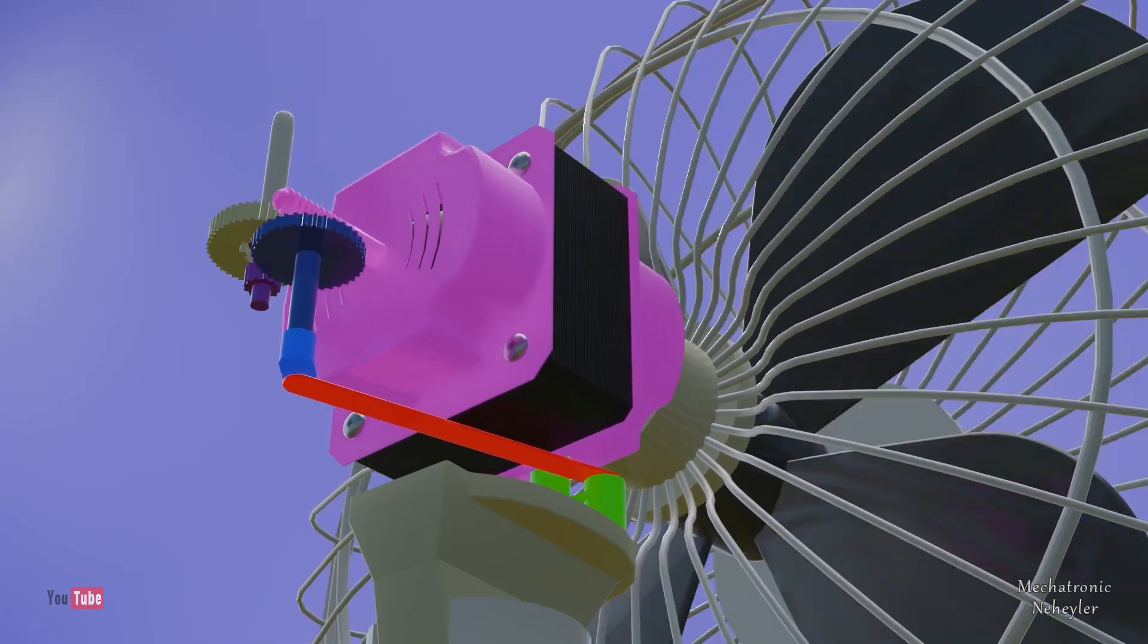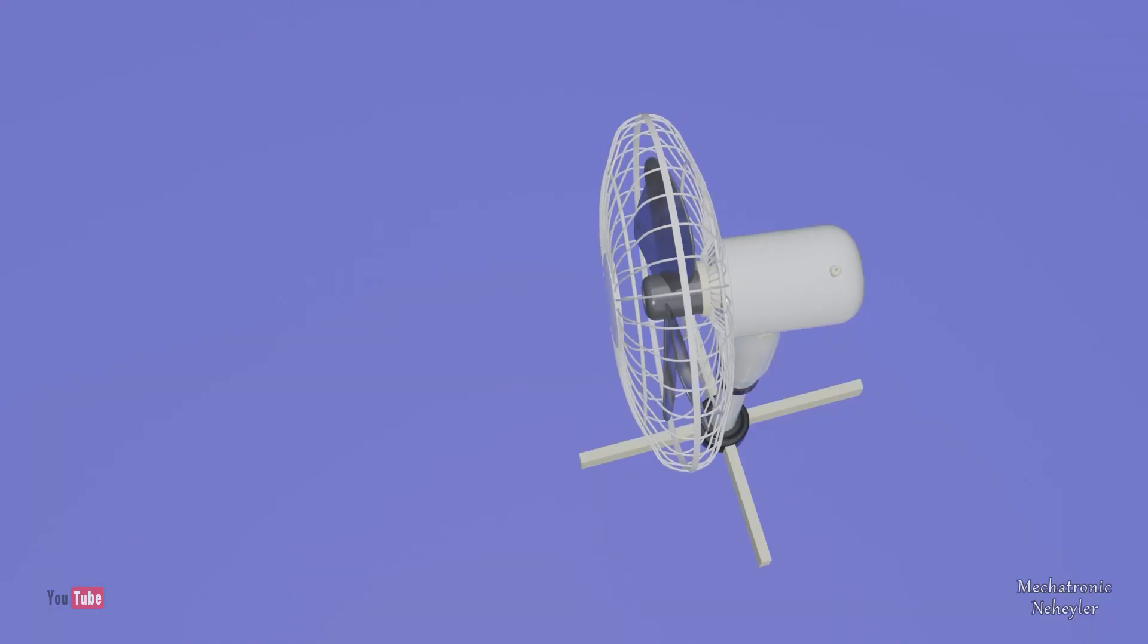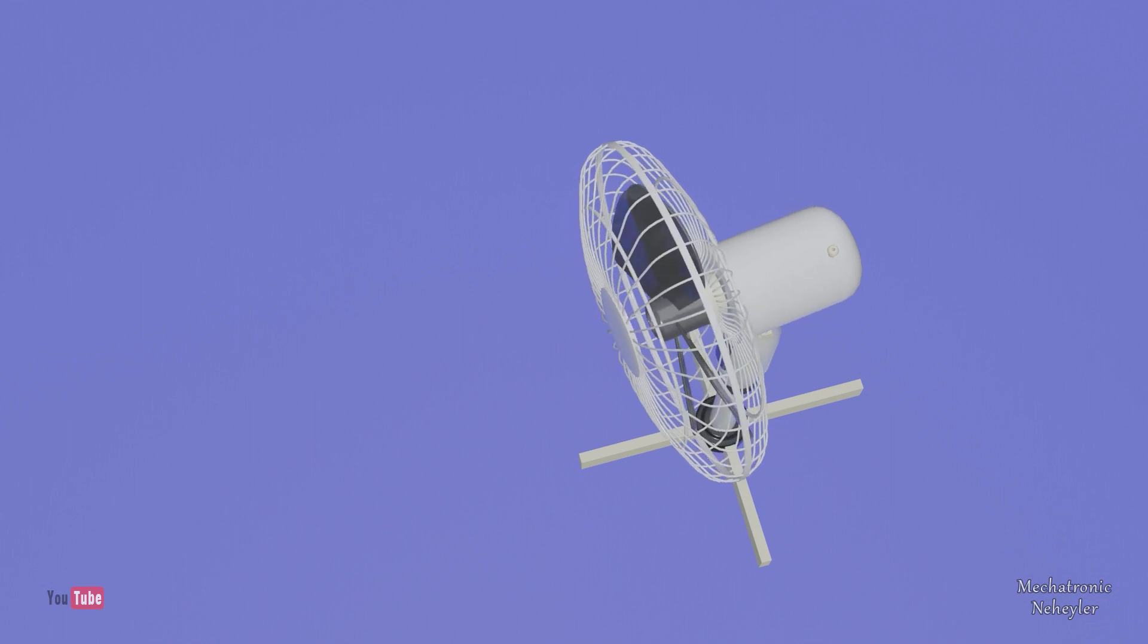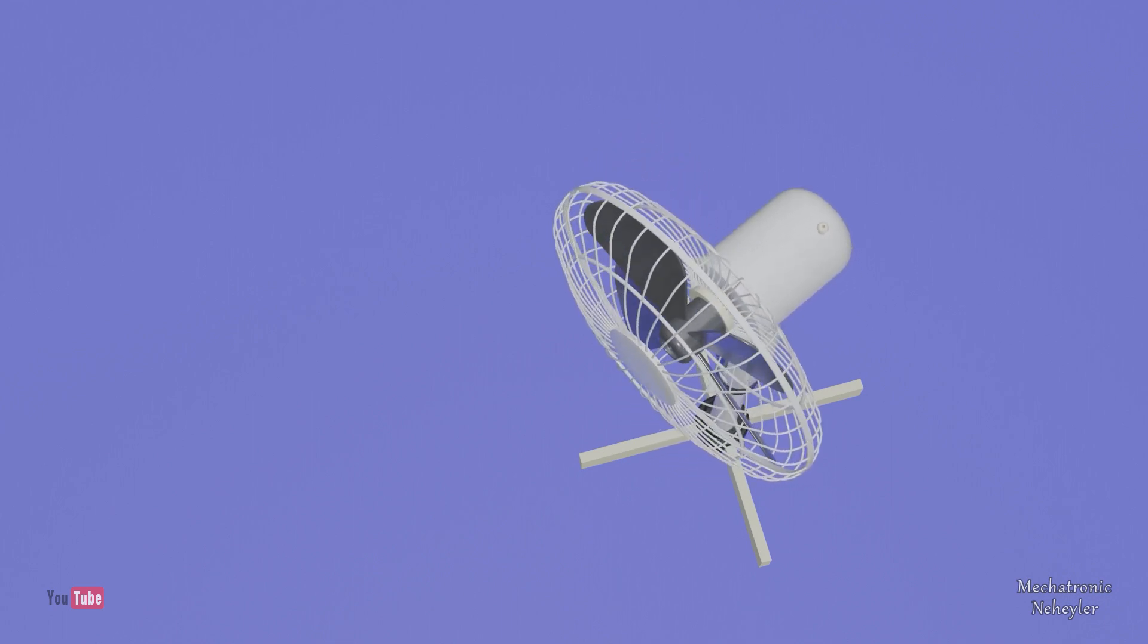All of which together allow the side-to-side movement of the fan to be executed. Up to this point we have already seen how the rotating movement and the side-to-side movement of the fan are carried out, but we still need to see how the speed of the fan blades is controlled.